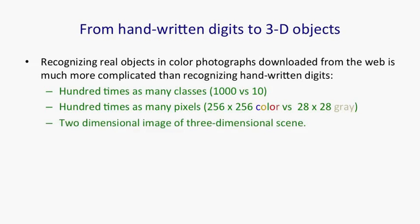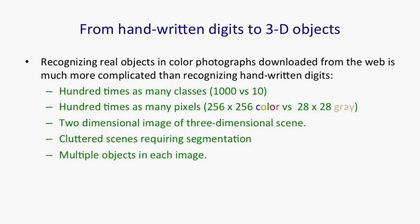Another factor is that in real scenes you have to deal with the fact that you've got a two-dimensional image of a three-dimensional reality, so a lot of information has been lost. Real scenes also have clutter of a kind that doesn't occur in handwriting. You don't have occlusion of large parts of objects by opaque other objects, many different kinds of objects in the same scene, or all the lighting variations that you get in real scenes.